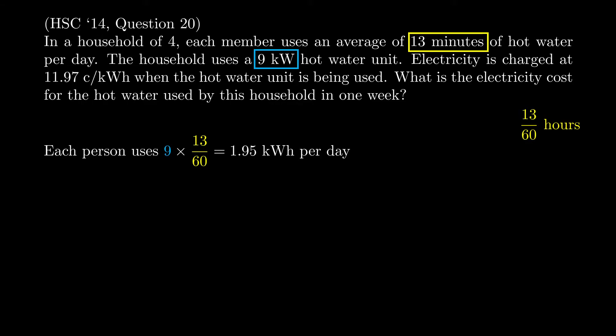Now this is a household of four, so with four people we must multiply that number by four. So the whole family would use a total of 7.8 kilowatt-hours per day.